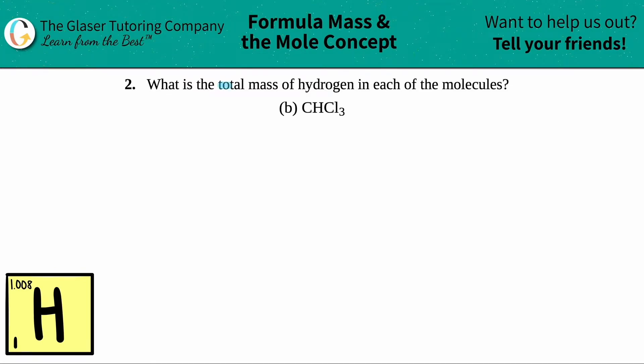Number two, what is the total mass of hydrogen in each of the molecules? And then we have letter B. So in this case, we have to find the total mass of hydrogen in CHCl3.